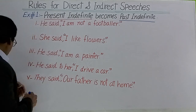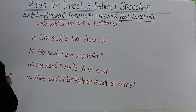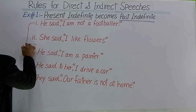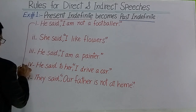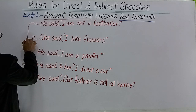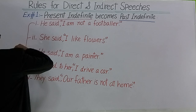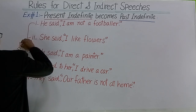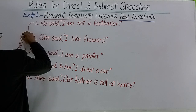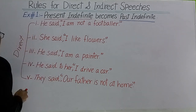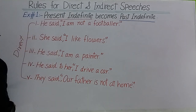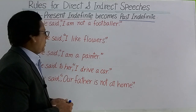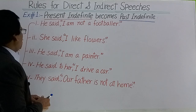یہ سب direct ہیں — یہاں سے یہاں تک all sentences direct speech ہیں۔ یہ سب inverted commas والے direct ہیں۔ اب ان کو indirect میں کیسے change کریں گے، وہ دیکھتے ہیں۔